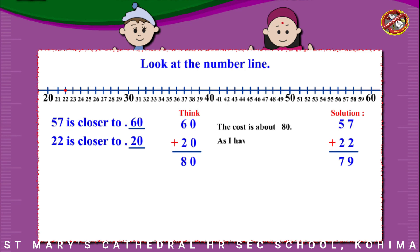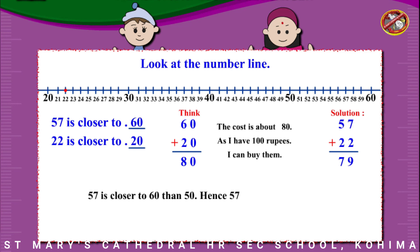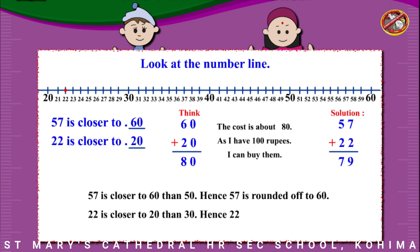As I have rupees 100, I can buy them. 57 is closer to 60 than 50. Hence, 57 is rounded off to 60. 22 is closer to 20 than 30. Hence, 22 is rounded off to 20.